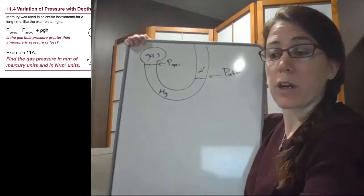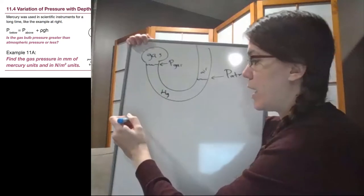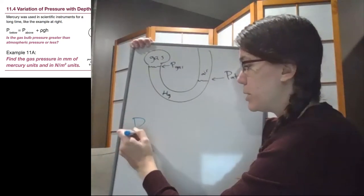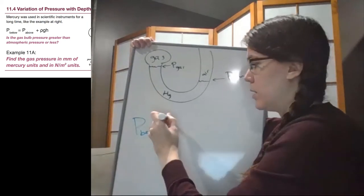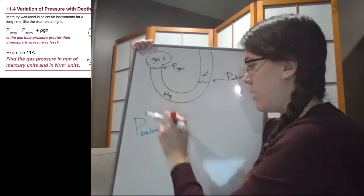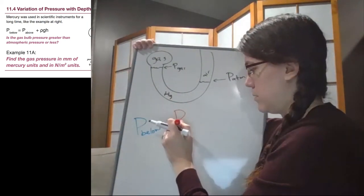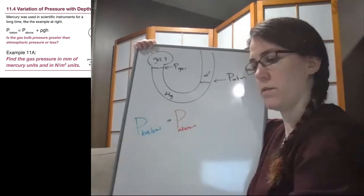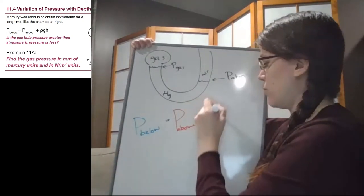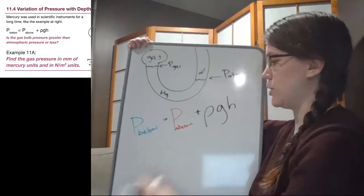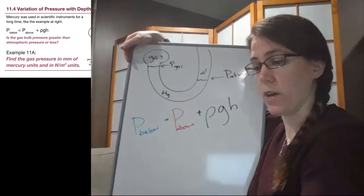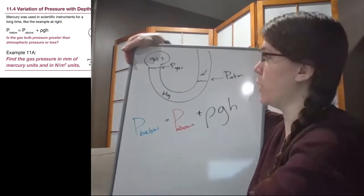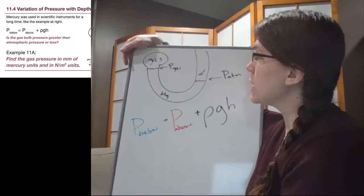Now if we think about our situation here, we have that pressure below equals pressure above plus rho gh. That's our standard set of, or that's our standard tool, our standard equation.